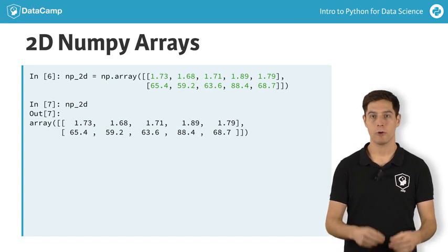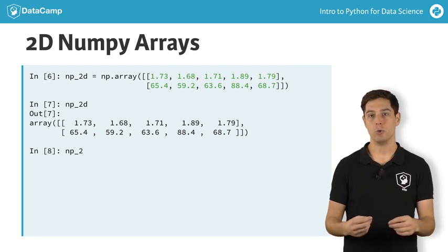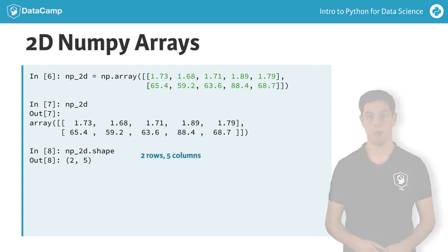Each sublist in the list corresponds to a row in the two-dimensional numpy array. From np2d.shape, you can see that we indeed have two rows and five columns. shape is the so-called attribute of the np2d array that can give you more information about what the data structure looks like.